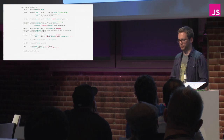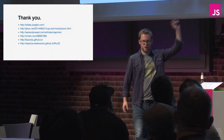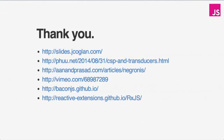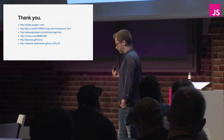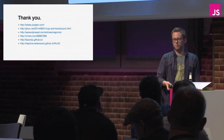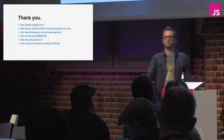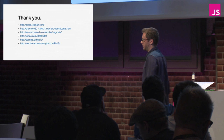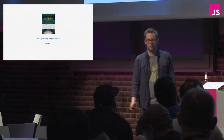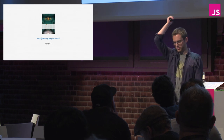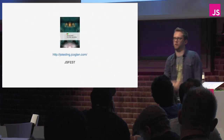To sum up: slides are at slides.jcoglin.com. Tom Ashworth's article is linked from there. Anand Prasad wrote a great article about the similarities between promises, lists, and maybes and how they compose. Philip Roberts gave a really good talk about functional reactive programming that you should watch. There are also links to the streaming libraries used in this talk. Earlier this year I wrote a book — if you use the voucher code JS-FIRST this weekend you can get £5 off, and it's already half price. Thank you very much.